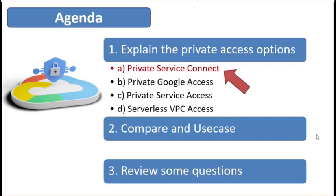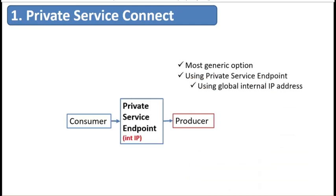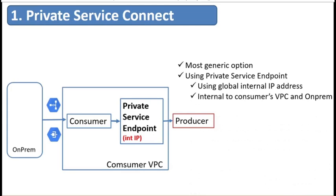Let us start now with the first option: Private Service Connect. This is the most generic option to let the consumer connect to the producer privately. This is done by creating a private endpoint using a global internal IP address within your VPC network. You can also assign a DNS name to the internal IP address of the endpoint with a meaningful name. This name and endpoint IP address will be internal to the consumer VPC as well as to on-prem connected via VPN or Interconnect. You can also control which traffic goes to which endpoint if you have multiple endpoints. This option gives you access to all Google APIs and services included in the API bundle.